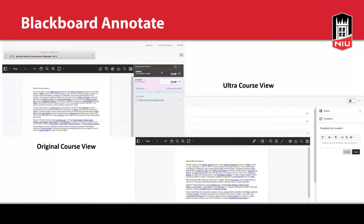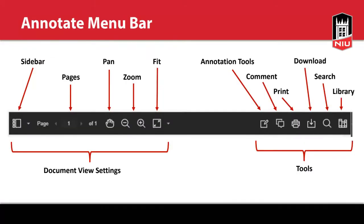Moving on — the Annotate tools are located in the bar at the top. This bar is divided into two sections: document view settings on the left and the tools on the right. We're not going to talk about most of the document view settings today — this stuff is all pretty standard in any software, including navigating to different pages. But this sidebar is something we're going to be talking about. On the tool side, there are common tools like the print icon, download, and search — those are standard — but we will be talking about the annotation tools, the comment feature, and the library.